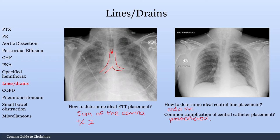A common complication of removing a central line is air embolism — when removing the line, an air bubble can get in, travel to the brain, and cause a stroke. This is a very dangerous complication of removing a central catheter.